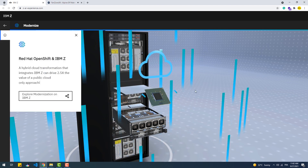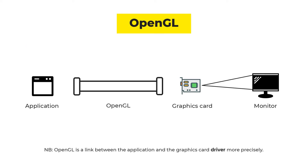OpenGL is an application programming interface, aka API, whose role is to simply make an application able to interact with the graphics card in order to render things on the monitor.